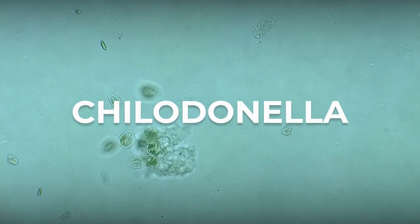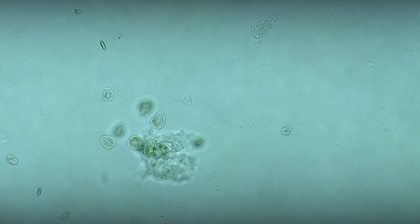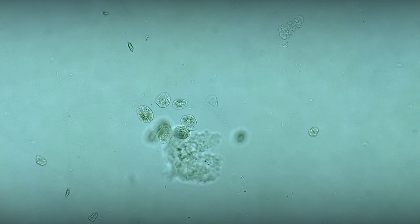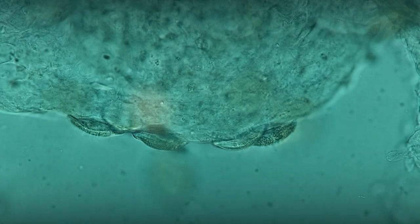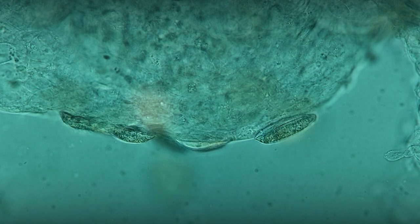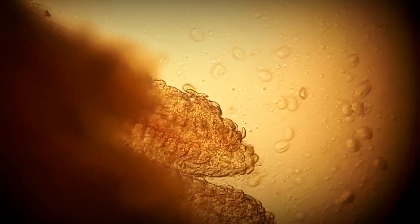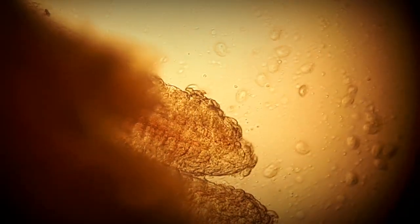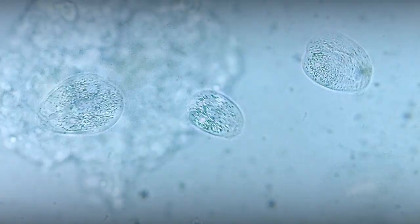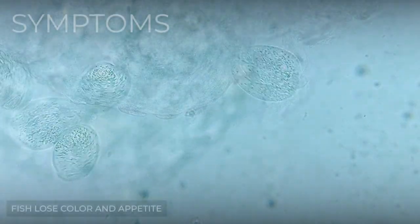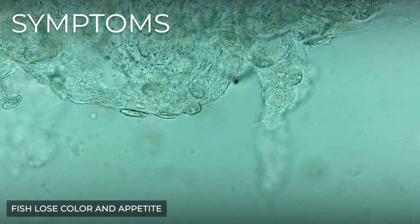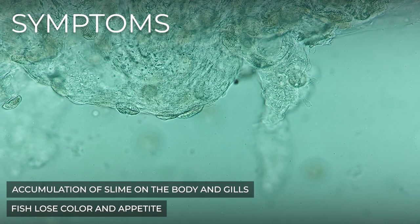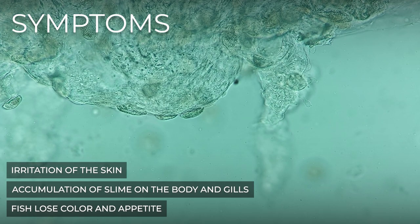Tricodinella is one of the three described genera in the family Tricodinellidae, which includes about 50 species. Tricodinella looks like a baseball cap or a heart. It causes loss of color and appetite, accumulation of slime on the body and gills, and irritation of the skin of fish.